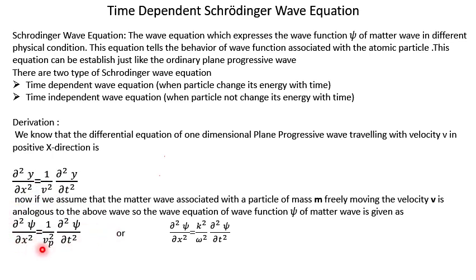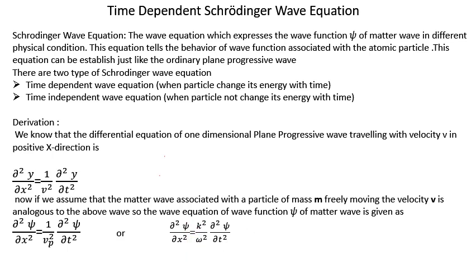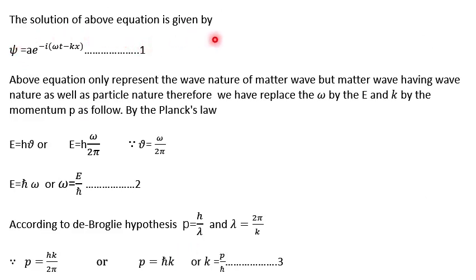As we know, the phase velocity V_p is equal to ω/k. We substitute the value of V_p into the denominator of the equation. When we do so, ω comes into the denominator and k goes back to the numerator, converting our equation into a purely wave-nature form, since ω and k are constants representing wave nature only.